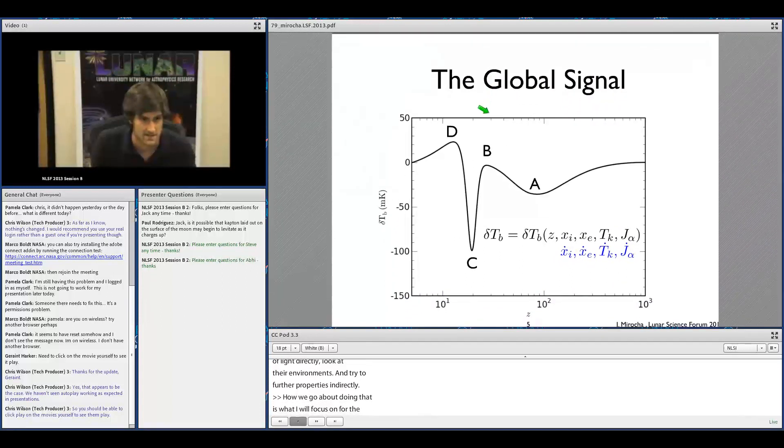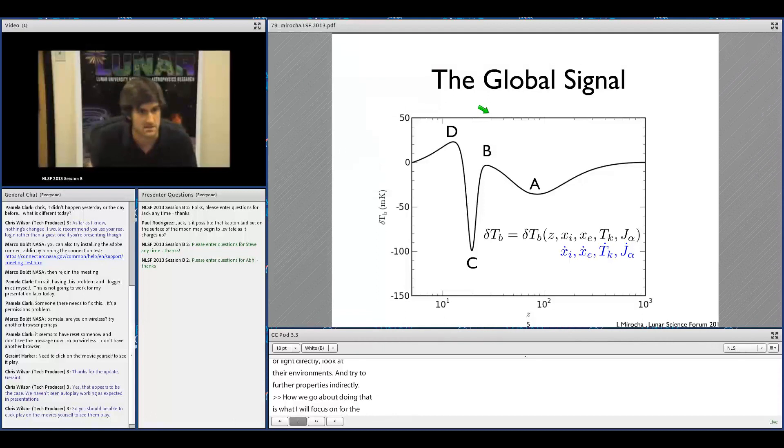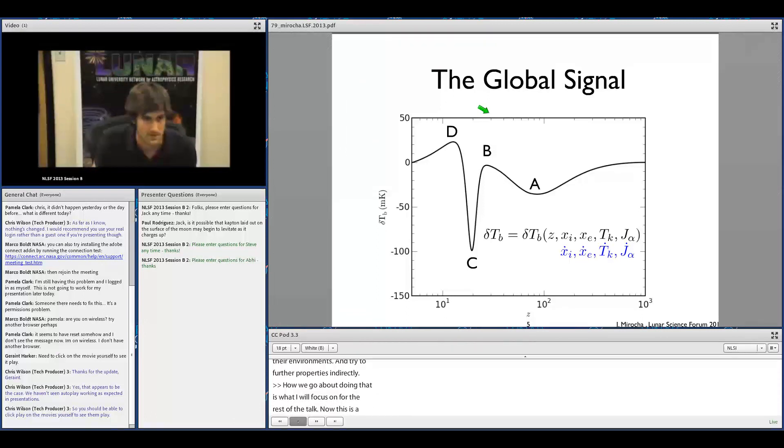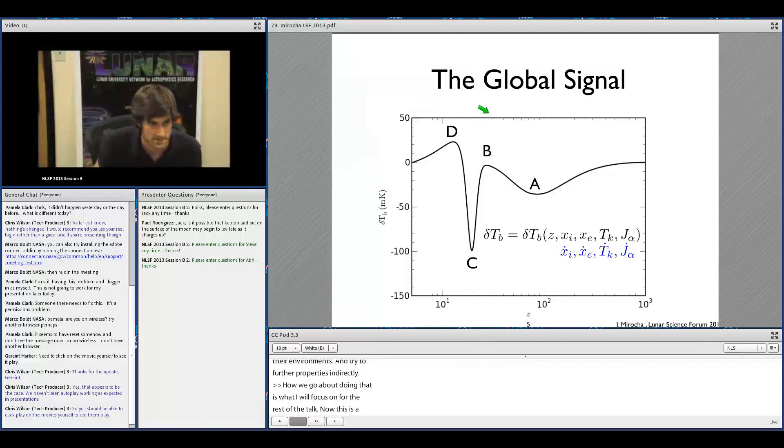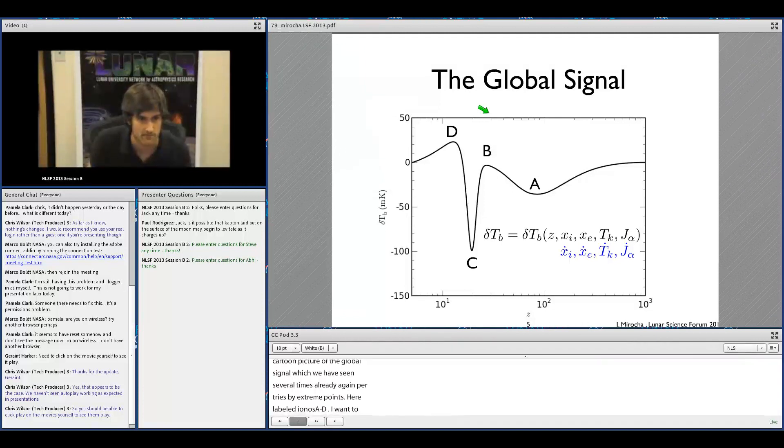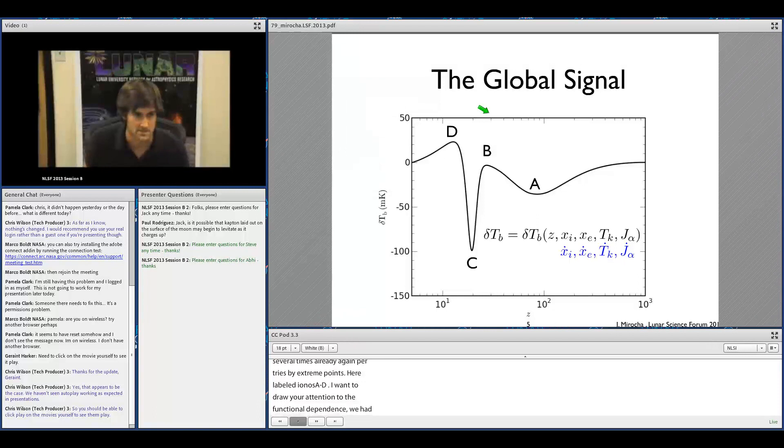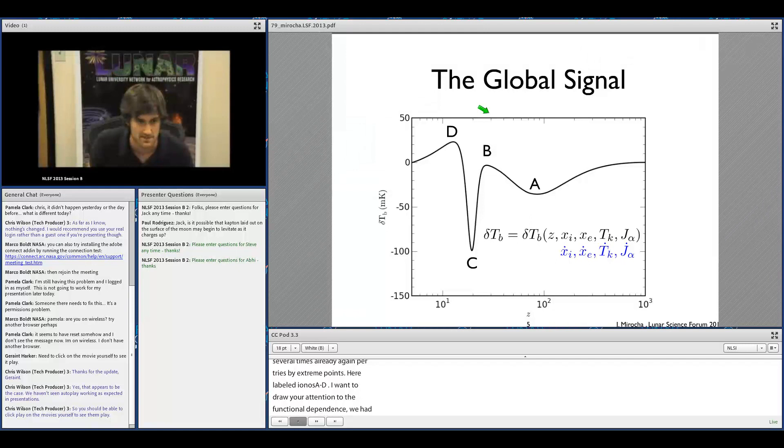This is a cartoon picture of the global signal, which we've seen several times already, parameterized by its turning points, here labeled A through D. I want to draw your attention to the functional dependencies of this observable quantity. On the x-axis we have redshift or time. On the y-axis is the brightness temperature relative to the cosmic microwave background.